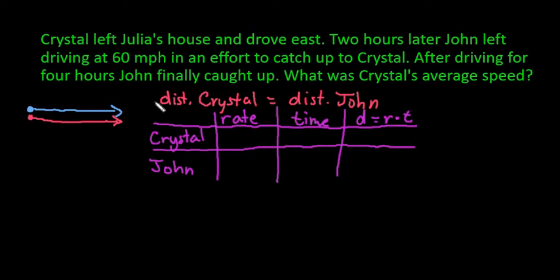So if we go through and read what it tells us, we have that John left driving at 60 miles per hour. So we know that John's speed is 60 miles per hour. Crystal's speed, we don't know. That's what we're trying to find. That is our unknown in this case.